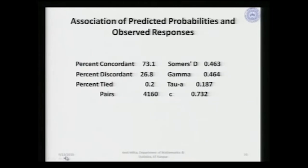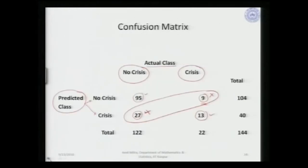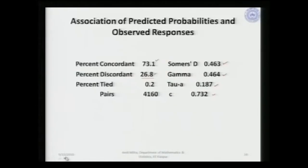The measures of association show percent concordant at just 73 percent with percent discordant quite high at 26.8 percent. These measures of association are not high enough to call this a good classification model.